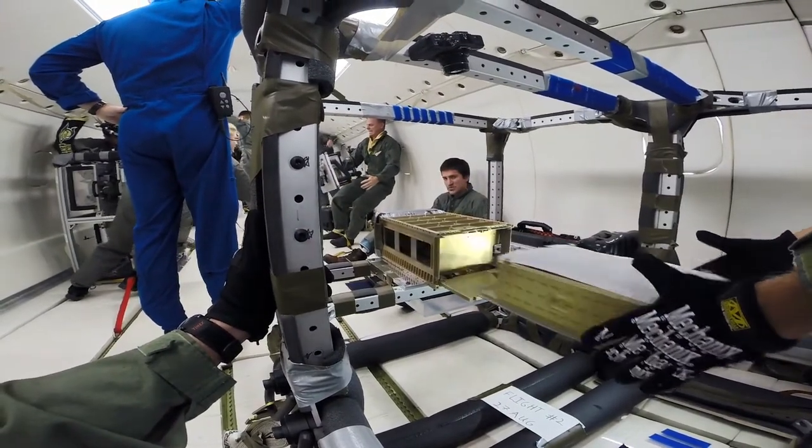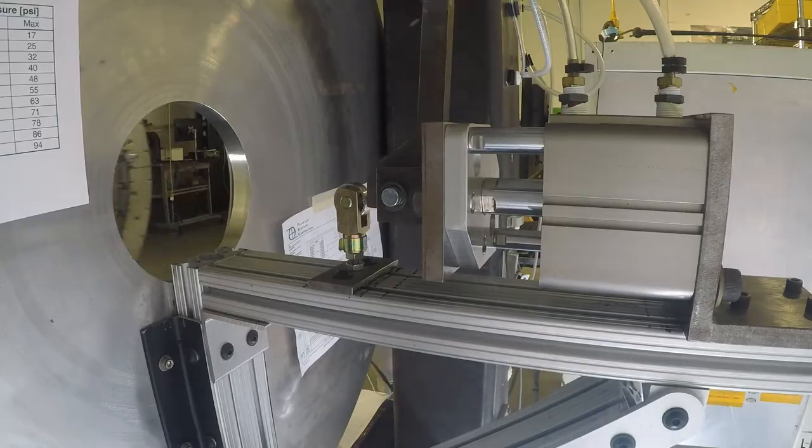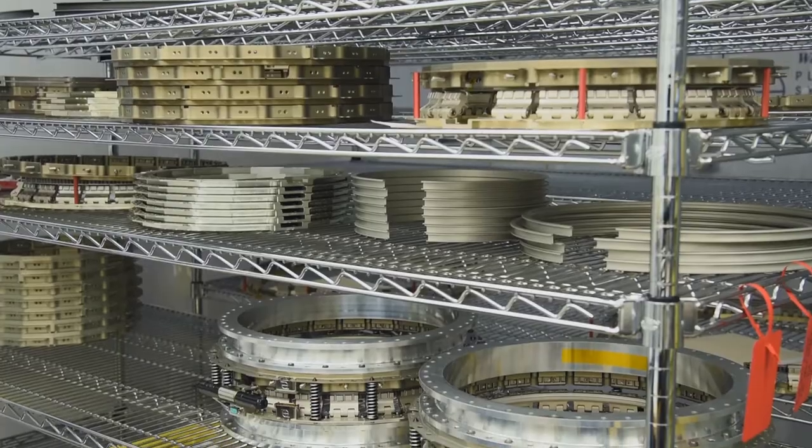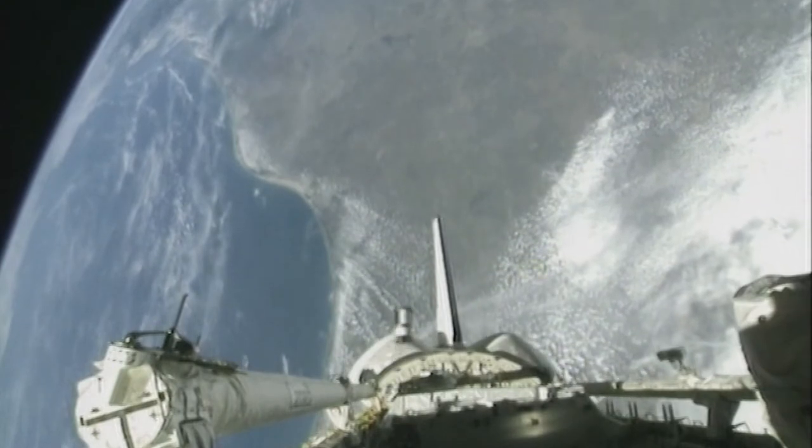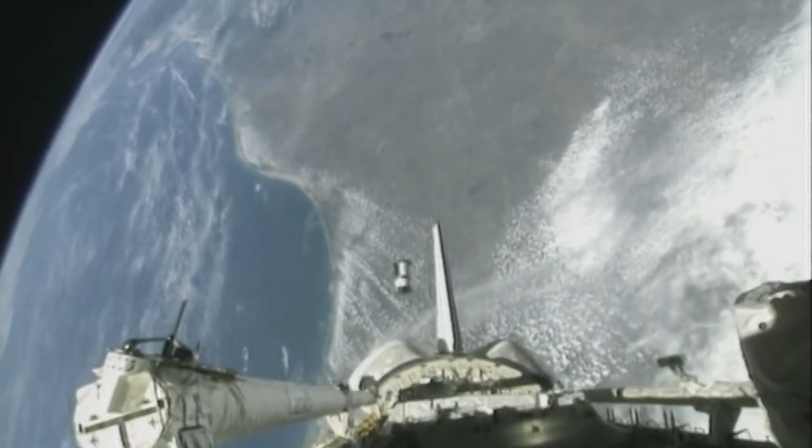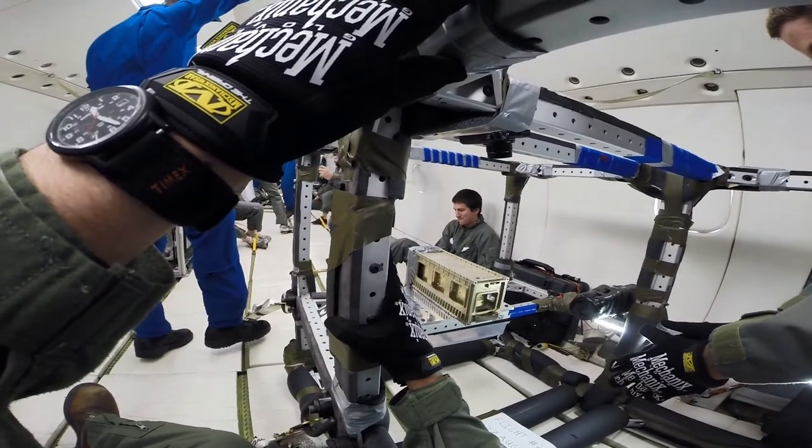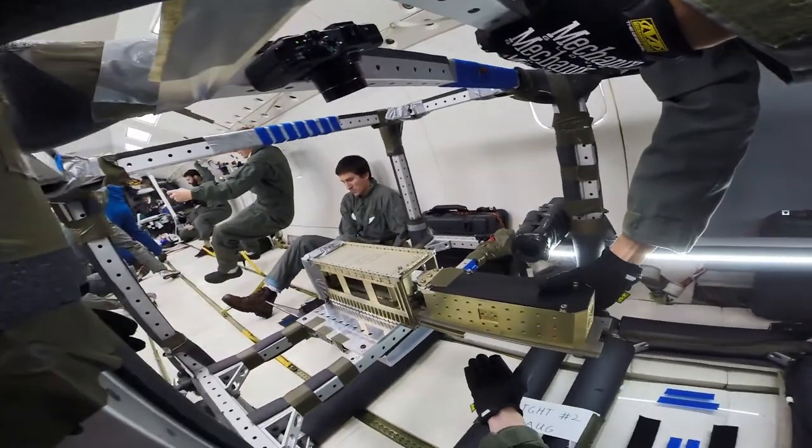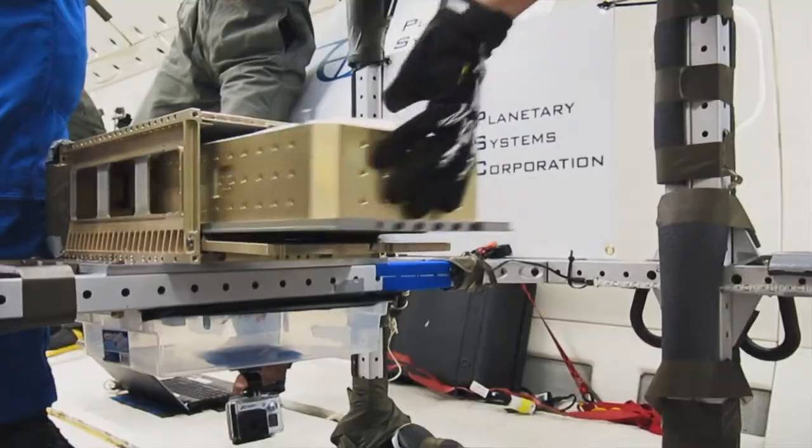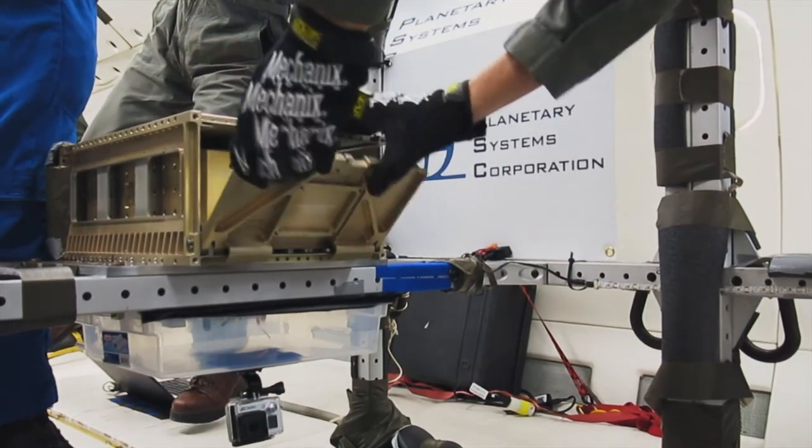Both the canisterized satellite dispenser and the light band are our separation systems. Light bands come in a variety of diameters and are designed to hold and release satellites. Canisterized satellite dispensers are designed to protect and deploy smaller containerized systems. Additionally, these solutions are easily tested.